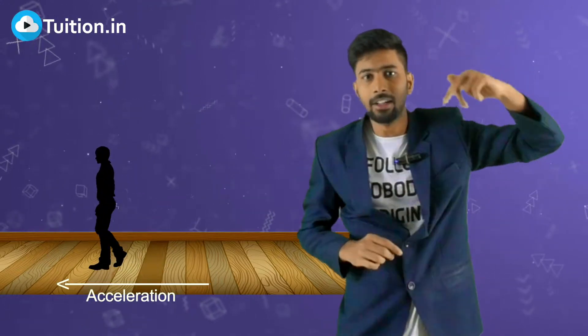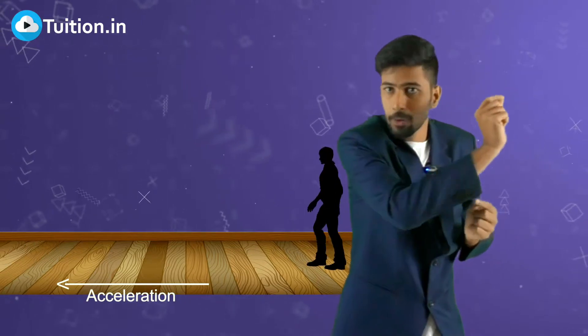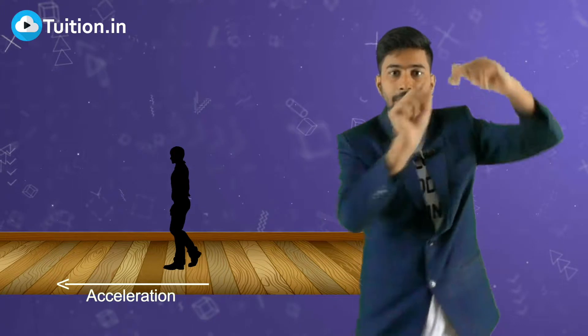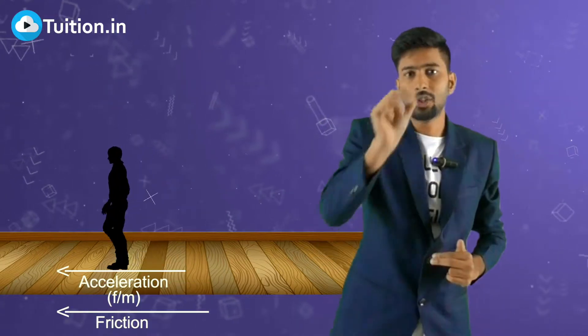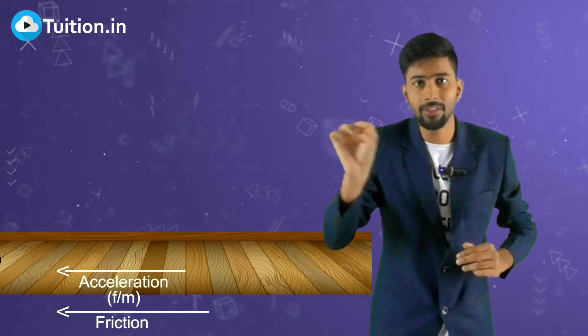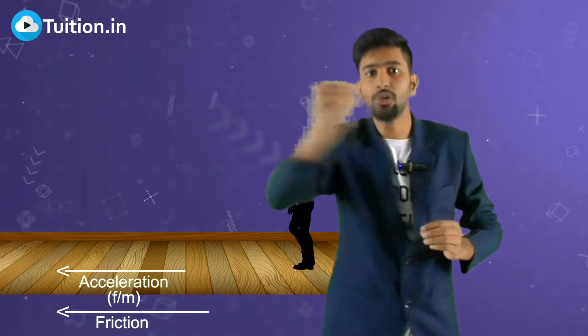If friction is allowing you to move ahead, and friction is a force, then friction should also provide you some acceleration. And if you're getting accelerated, you should keep on accelerating — you cannot move with constant velocity. So if friction acts in this direction, it should apply an acceleration of f/m (where m is your mass) in the forward direction. So how are you able to move with constant velocity?